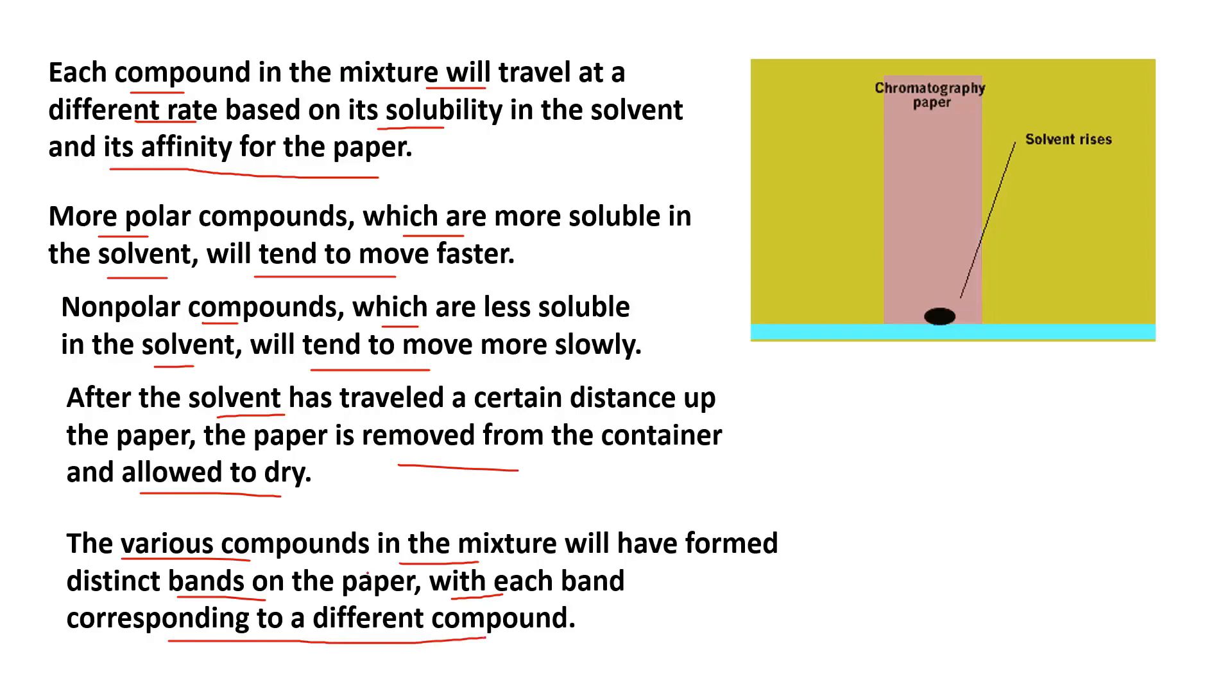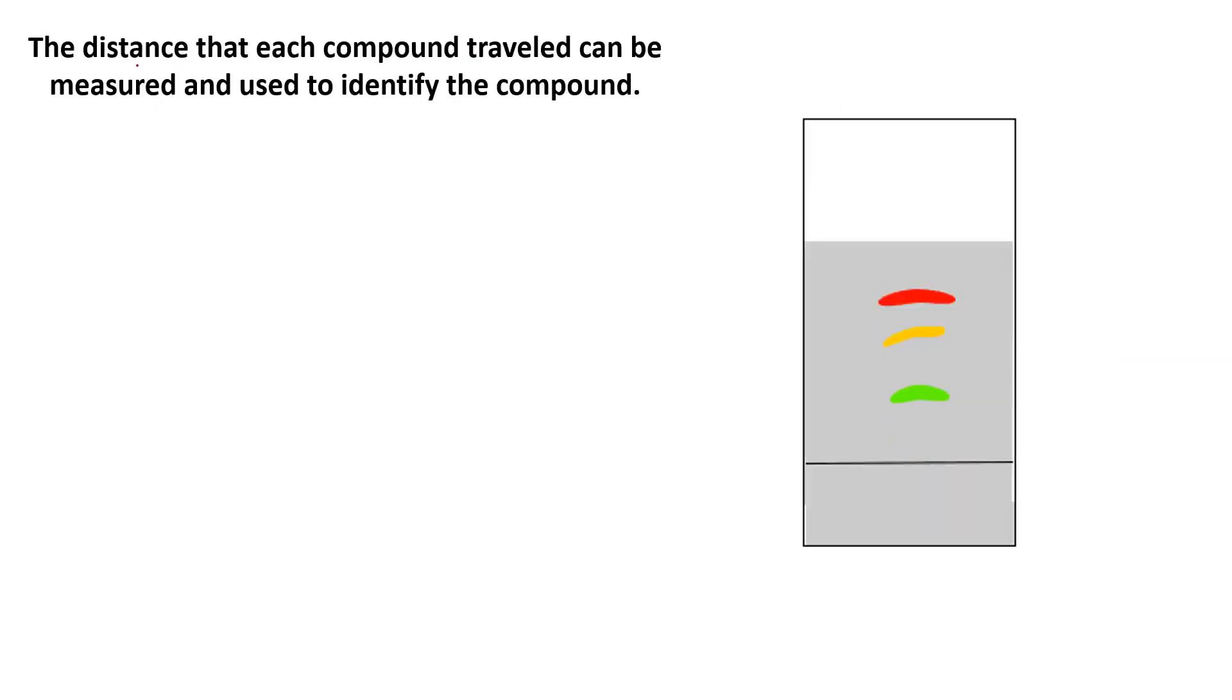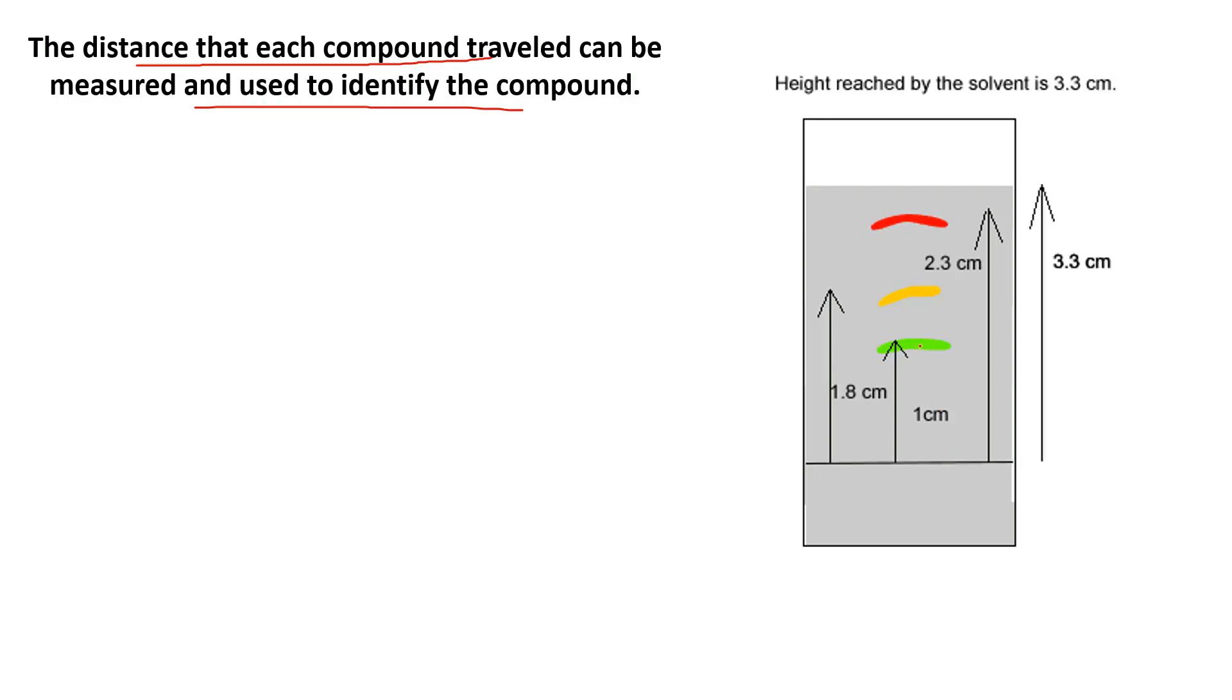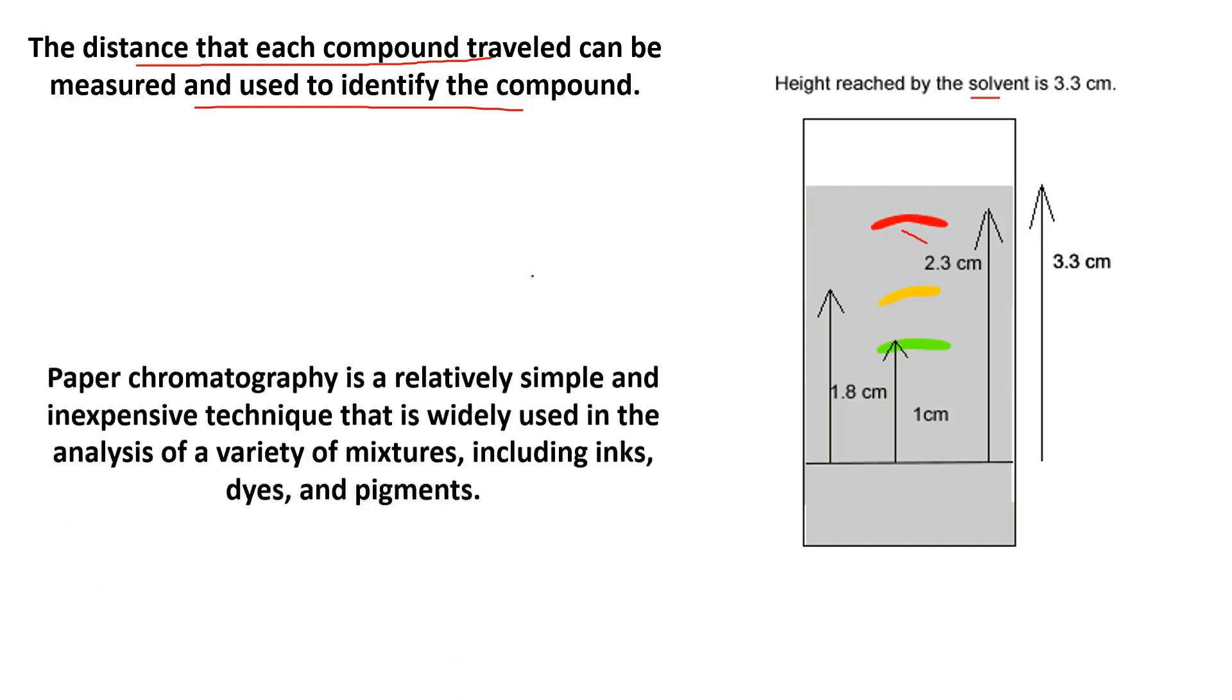The distance that each compound traveled can be measured and used to identify the compounds. Here you can see the green compound has traveled 1 cm, the yellow has 1.8 cm distance covered, the red color band has 2.3 cm covered, and the solvent has 3.3 cm.